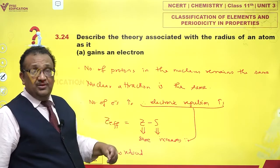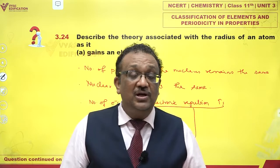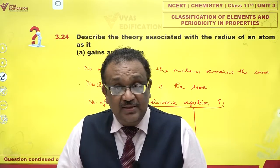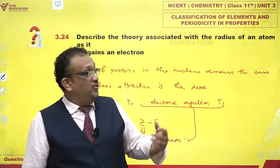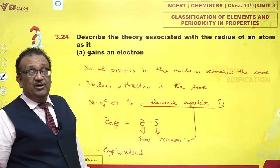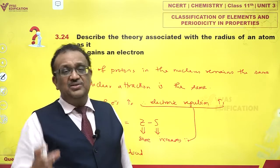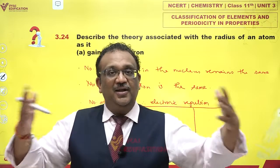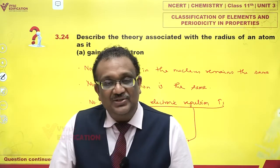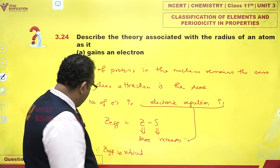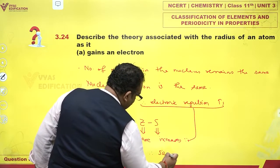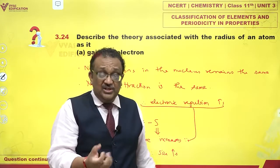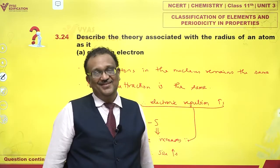The reduced effective nuclear charge means the outermost electron feels the nuclear attraction a little less. Due to the additional repulsion, the outermost electron experiences lesser attraction by the nuclear charge, and hence it moves a little further away — the size increases. The nuclear pull inwards decreases, and size increases — as simple as that.